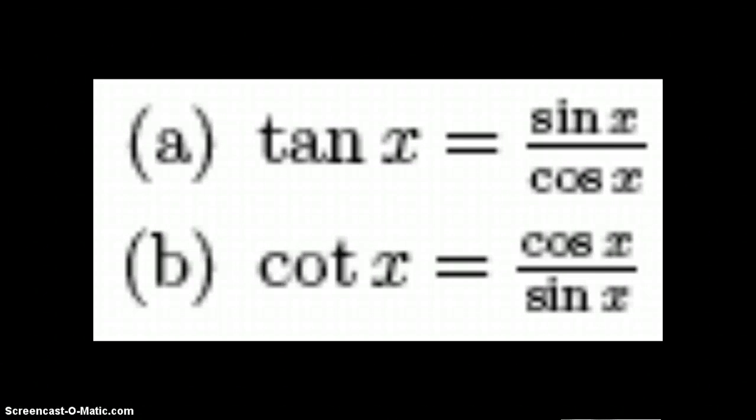So here we have tan x equals sine x over cosine x. Cotangent x equals cosine x over sine x.